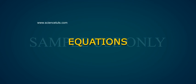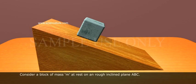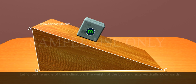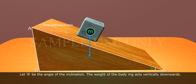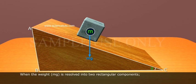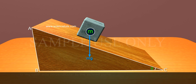Now we can derive the equations. Consider a block of mass M at rest on an inclined plane ABC. Let θ be the angle of inclination. The weight of the body Mg acts vertically downwards. When the weight Mg is resolved into two rectangular components: